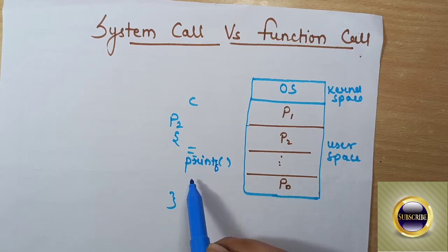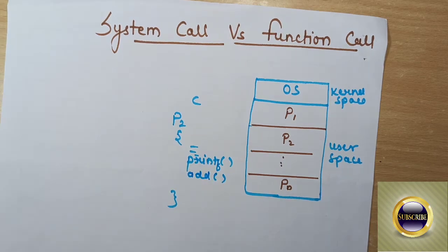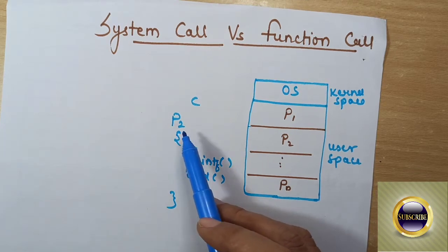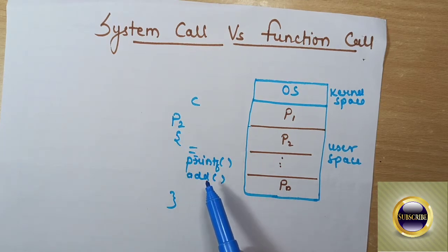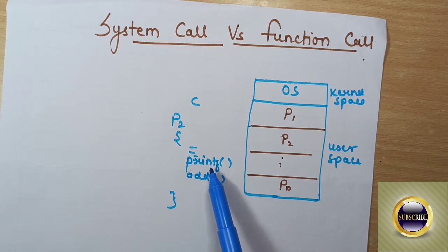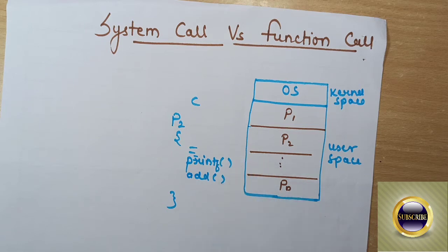In C language, to print something we use the printf function. So this program may have a built-in function like printf, and also a user-defined function like an add function if you are trying to add two numbers. So this program contains two functions: one is add, which is a user-defined function, and another is the built-in function printf, which is used to print something on the screen.